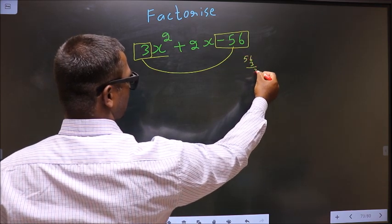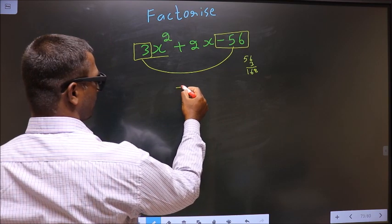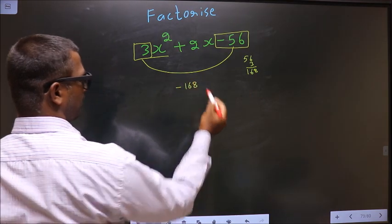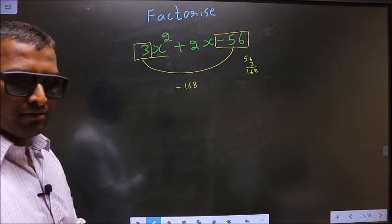So 6 times 3 is 18, 3 times 5 is 15, giving us -168. This is your step 1.